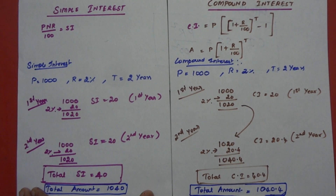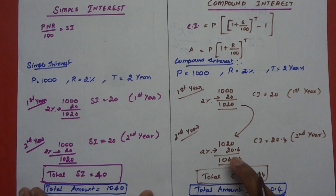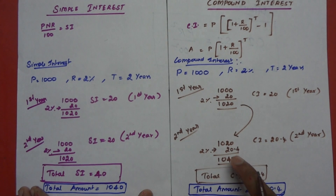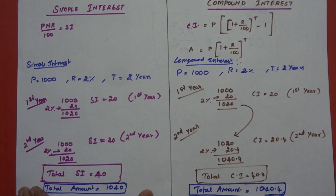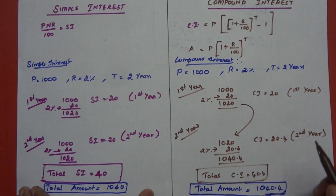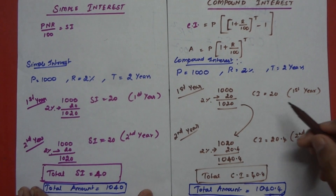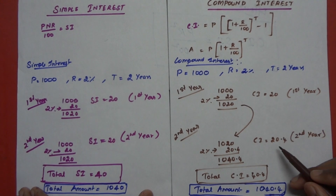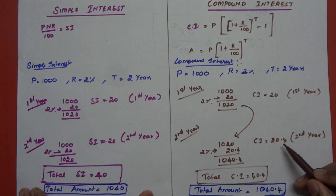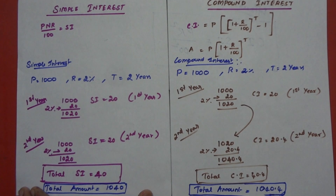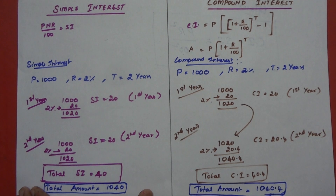The 1,020 at 1 percent gives 10.2, and 2 percent gives 20.4. So the amount is the same. The second year of compound interest is calculated on the new amount.